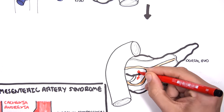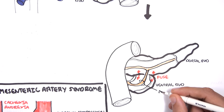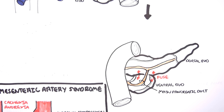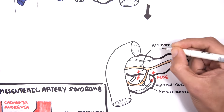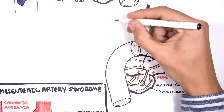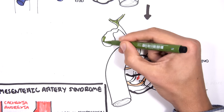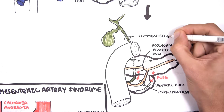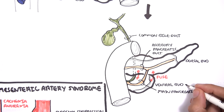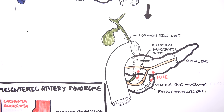The ventral pancreatic bud fuses with the dorsal pancreatic bud and becomes the uncinate process. The ducts of the ventral and dorsal buds anastomose to form the main pancreatic duct, while the other becomes the accessory duct. The common bile duct joins with the main pancreatic duct and drains into the duodenum.